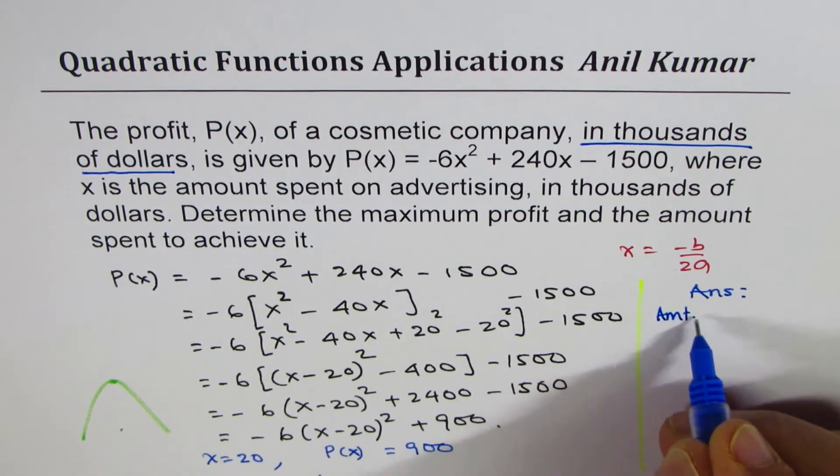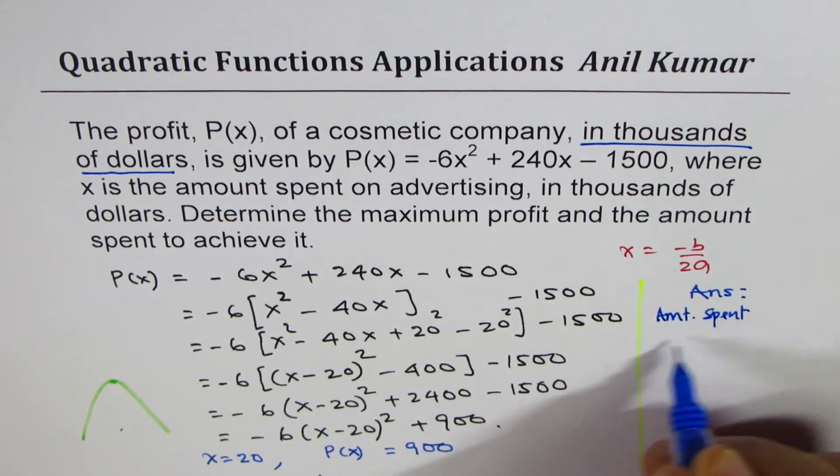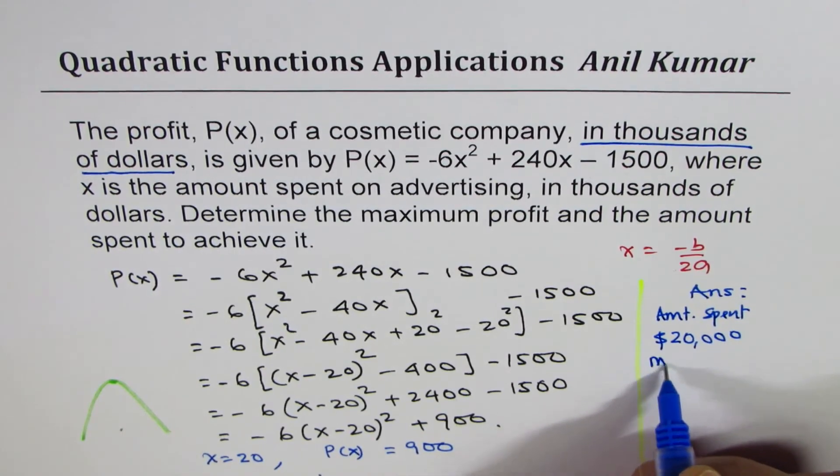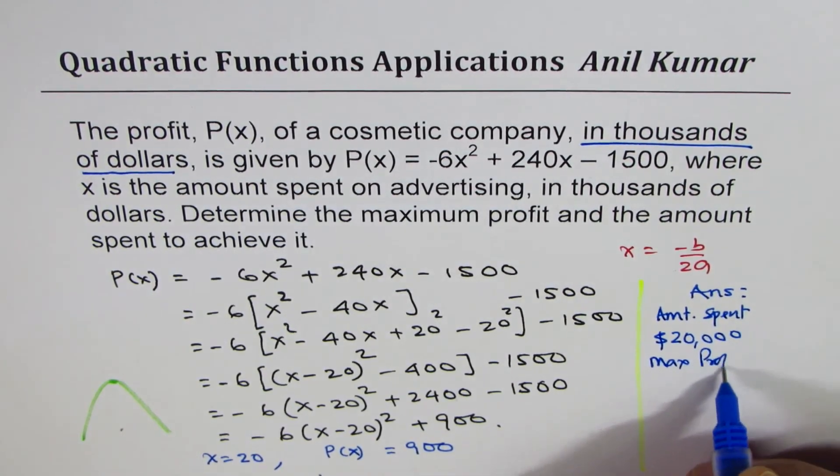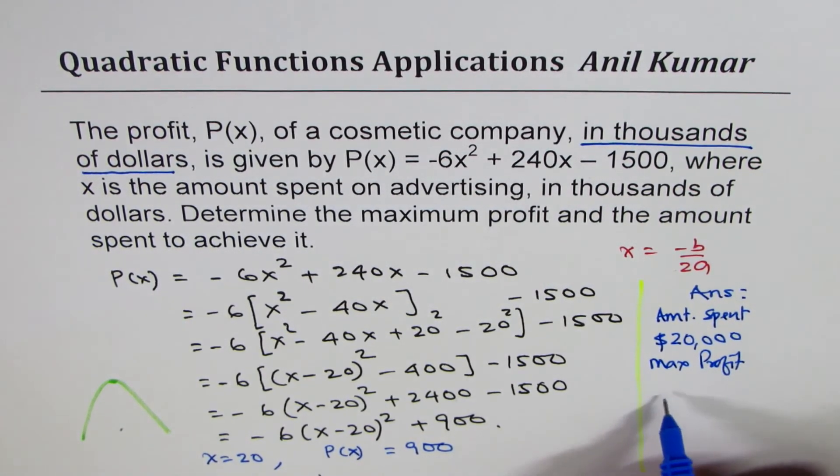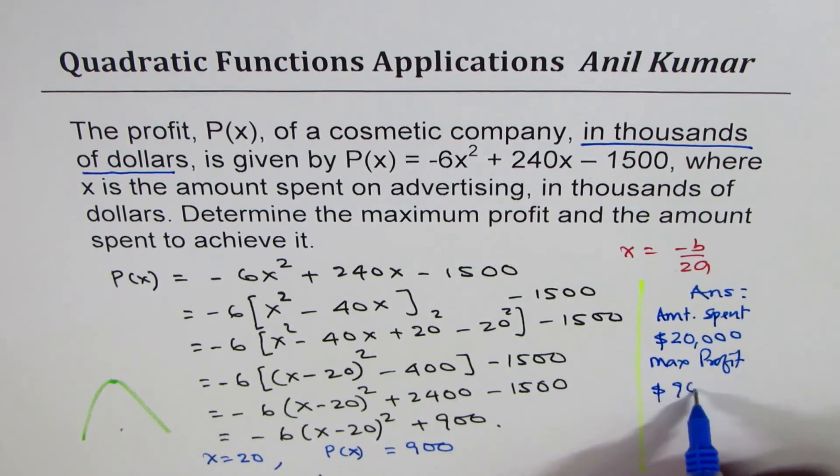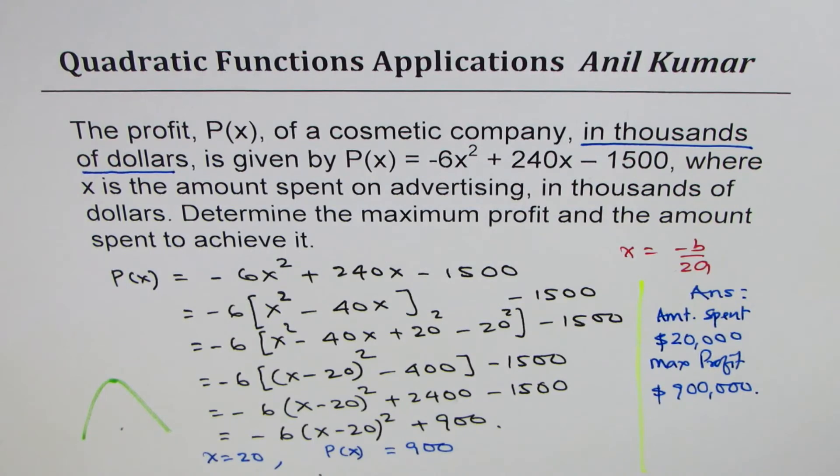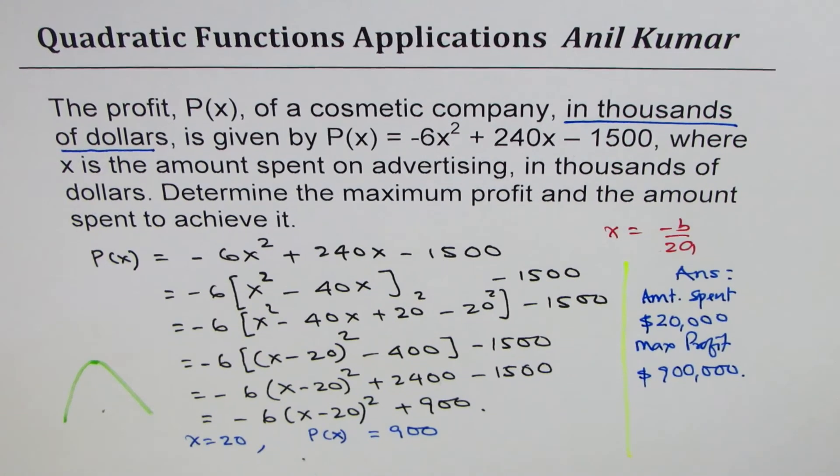So amount spent will be $20,000. Maximum profit will be $900,000. So be clear, you have to include units which is dollars and thousands.